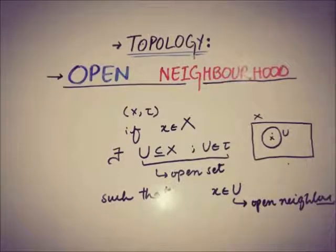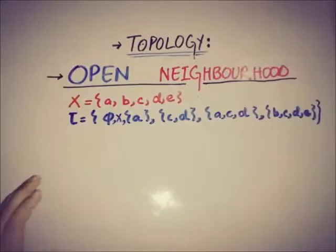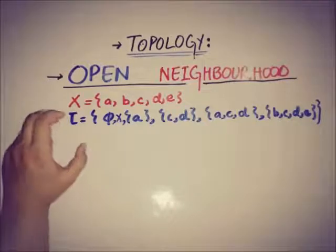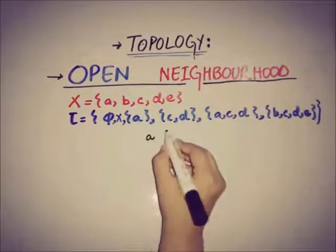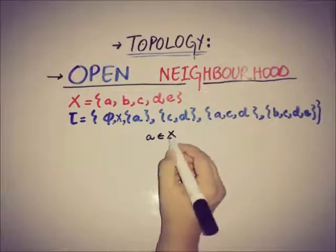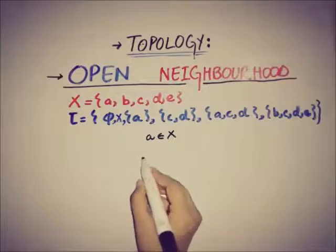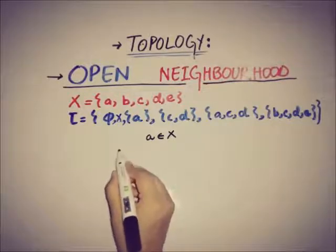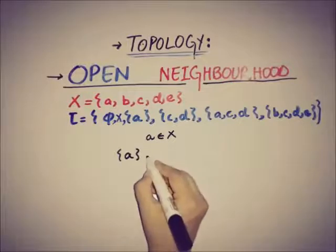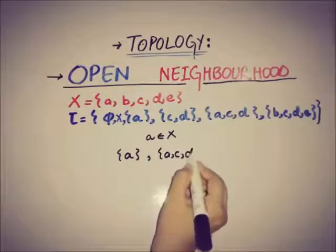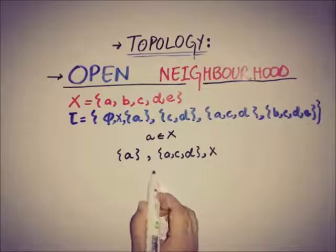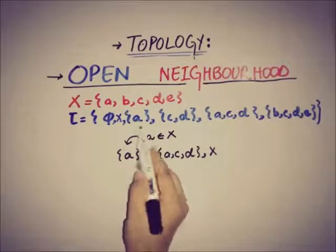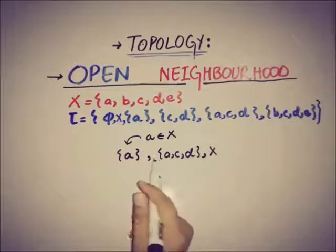Now we will see some examples to fully understand this concept. If we have a set x and a topology on x, we can pick any member from x — let's say we pick a, where a belongs to set x. Looking for the open neighborhoods of a: the first is {a}, the second is {a, c, d}, and the third is x itself.